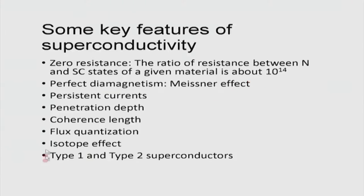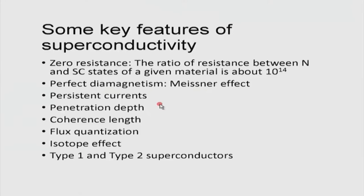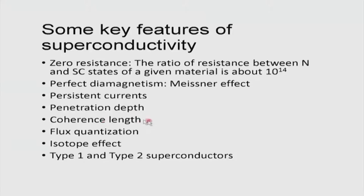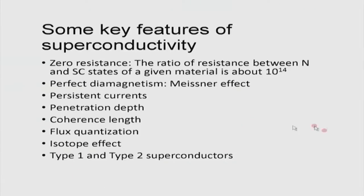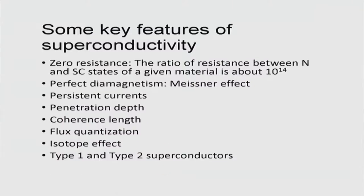The perfect diamagnetism is given by the Meissner effect. You have also studied persistent current, which has many applications. There is also the concept of penetration depth — a depth over which fields can actually penetrate — and the coherence length, which is essentially the dimension over which two electrons can form a Cooper pair. It is not that two electrons are very close; it spans many lattice spacings. Flux quantization means the flux trapped within a superconducting loop must be quantized. The isotope effect provides support for BCS theory, and then comes the difference between type 1 and type 2 superconductors.